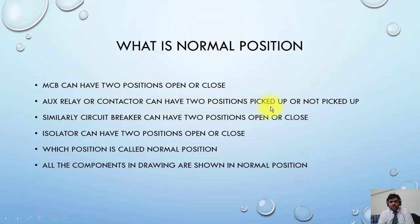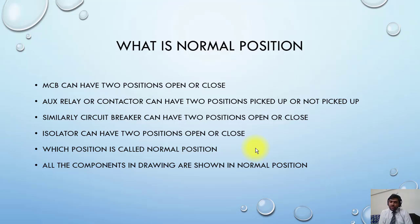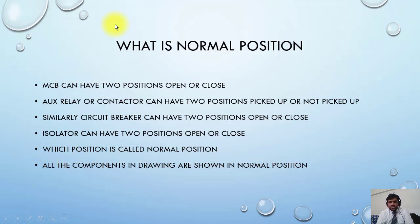An auxiliary or contactor can have two positions: picked up or not picked up. Similarly, a circuit breaker can have two positions: open or close. An isolator can have two positions: open or close. All the components in drawings are shown in normal position. Isolator normal position is open, breaker normal position is open, contact normal position is de-energized.